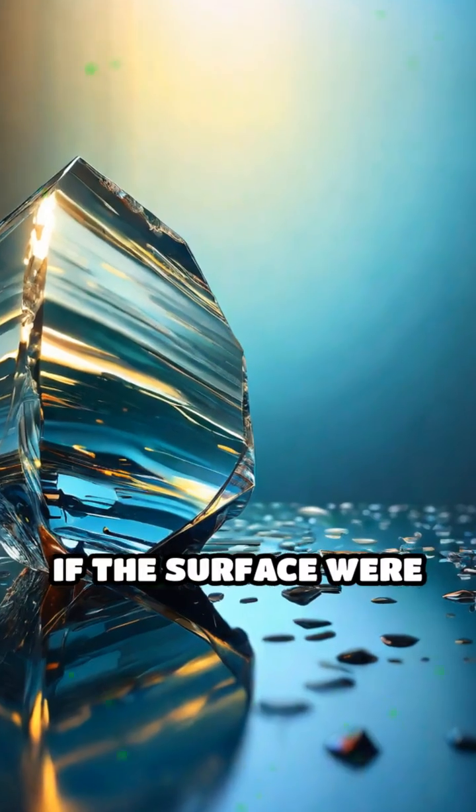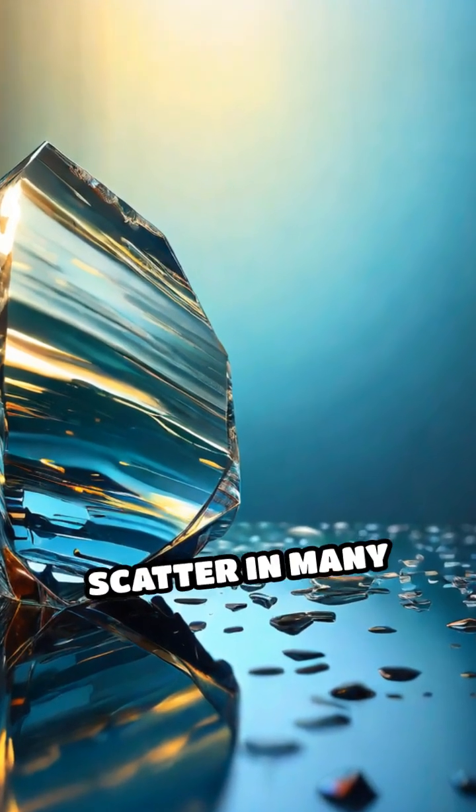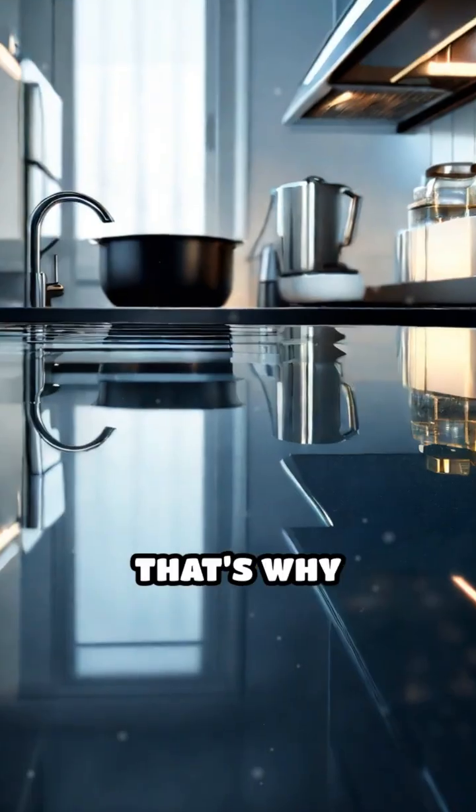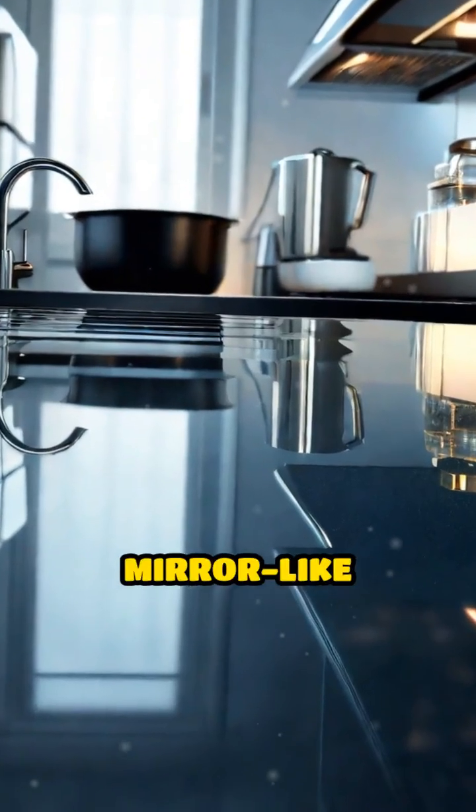If the surface were rough, the light would scatter in many directions, resulting in a blurry or distorted reflection. That's why everyday objects don't give mirror-like reflections.